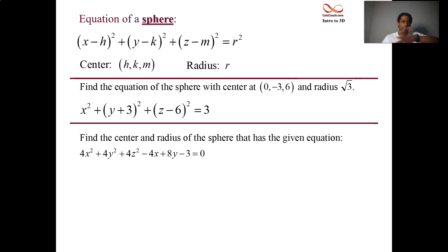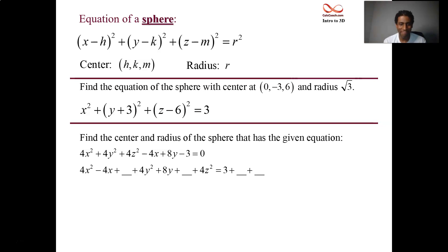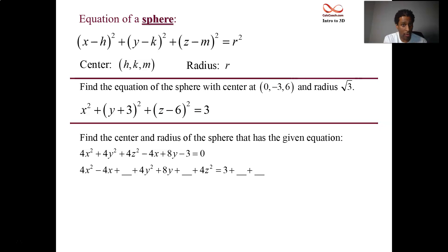So: 4x² minus 4x plus a blank space; 4y² plus 8y plus a blank space; 4z² — there's no z linear term, so leave it — that's already a perfect square. Equals: move the 3 over to the other side, and then the two blank spaces that balance out the two on the left. What makes completing the square difficult is when the coefficient on the squared term is not a 1. You have to factor that coefficient out — the 4 in front of x², y², and z² needs to be factored out.